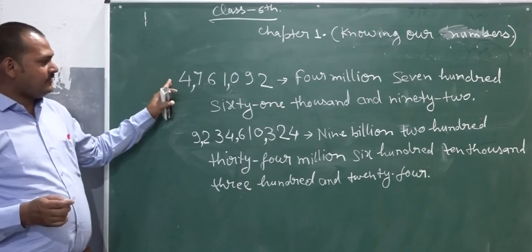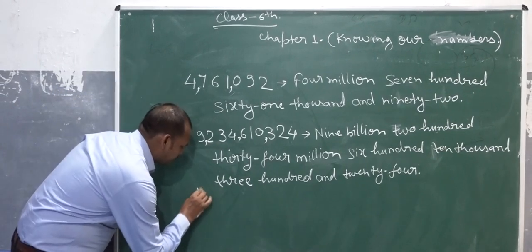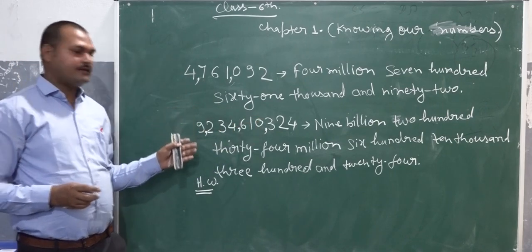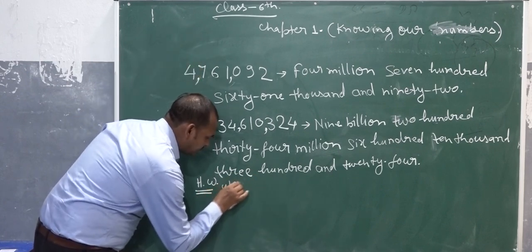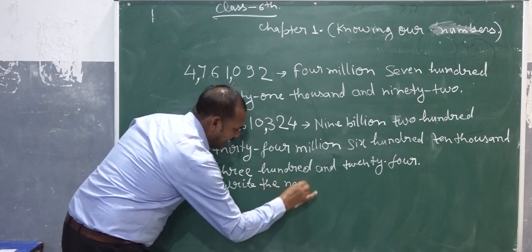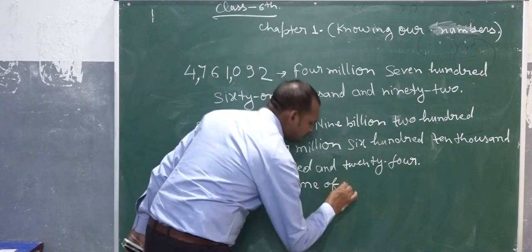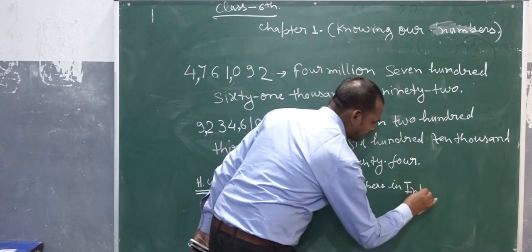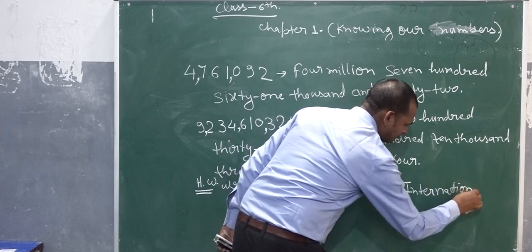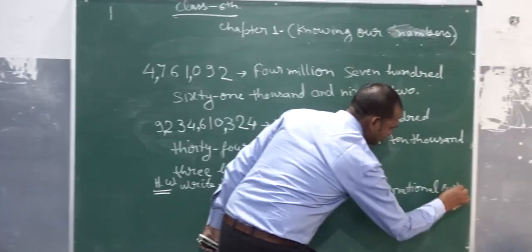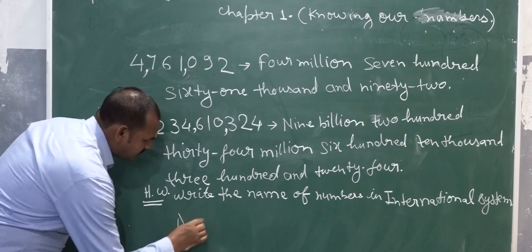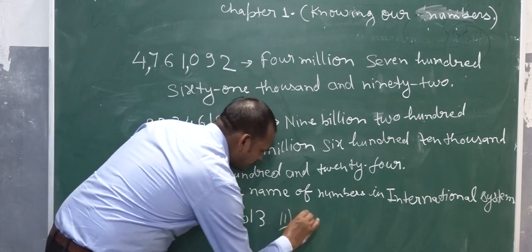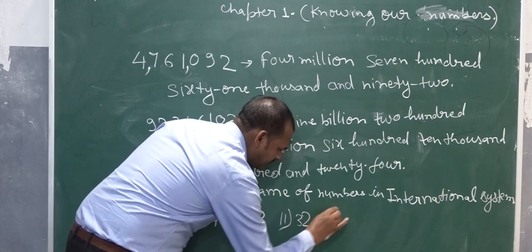So by this, if you understand, I will give them more. Write the name of the following numbers in the international system. First: 640,00013. Second: 320,000146.